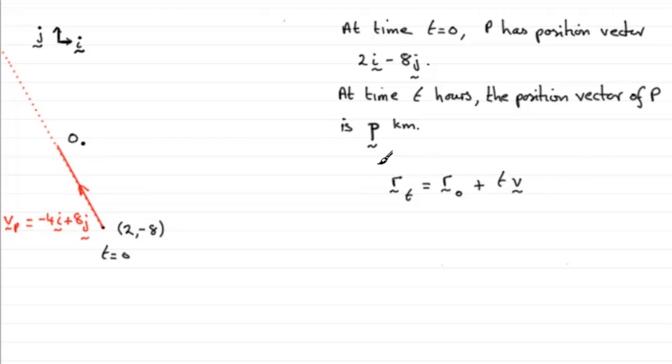And if we remember this result, we should be able to quote straight away the position vector of the boat p at time t hours. Because it will just be given as p equals the initial position at time t equals 0,